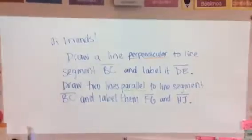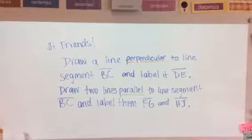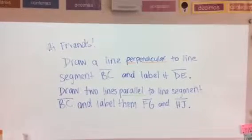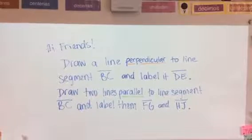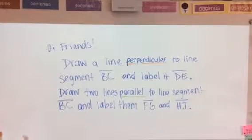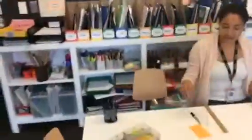Hi, friends. Today's math problem says, draw a line perpendicular to line segment BC and label it DE. Draw two lines parallel to line segment BC and label them FG and HJ. Let's go to Profe for some help on this.